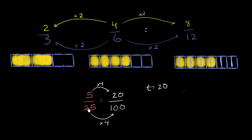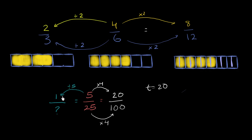But what if someone says: 5 over 25 is equivalent to 1 over question mark? Well, you could say: to get our numerator from 5 to 1, we have to divide by 5. And so similarly, we have to divide the denominator by 5. So if you divide the denominator by 5, 25 divided by 5 is going to get you 5. So these are all equivalent fractions: 1 fifth is equivalent to 5 twenty-fifths, which is equal to 20 hundredths.